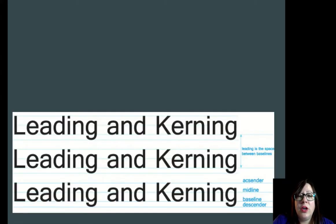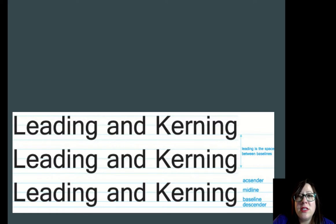Leading and kerning are the two main ones we need to know. Leading is the spacing between the two lines of text when you make a paragraph, and you can change this in many word processing softwares — but we can also control it in Photoshop as well. Tracking is the spacing in between letters, and leading is the spacing between lines.